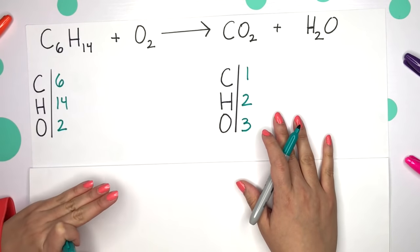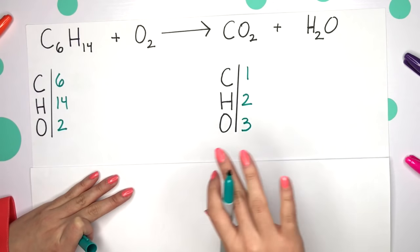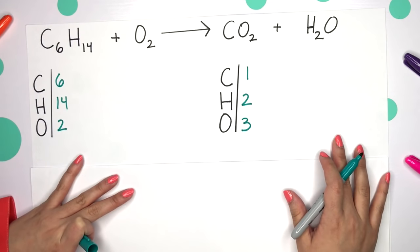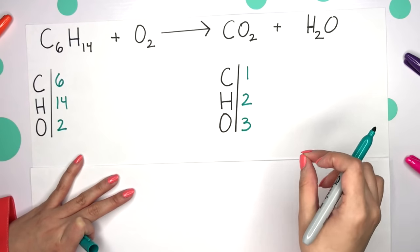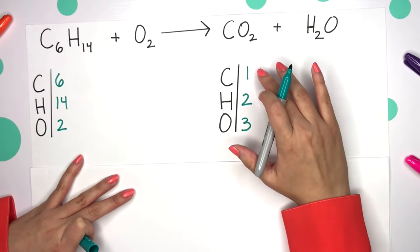Remember, you always want to leave oxygen for the very end whenever you're balancing equations, and also leave hydrogen for the second to last. So I'm going to start off with just balancing out the carbon.